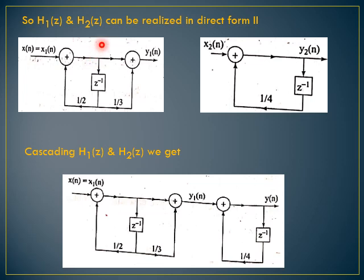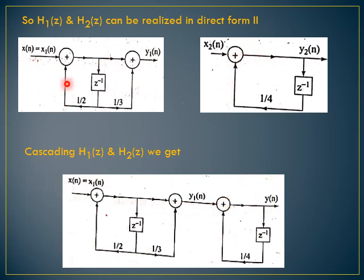There is a single delay, and we have poles and zeros. For H2(z) there are only poles. We cascade these together and get the final answer. This is the individual direct form 2 of H1(z) and direct form 2 of H2(z); together cascaded, we get the complete structure.